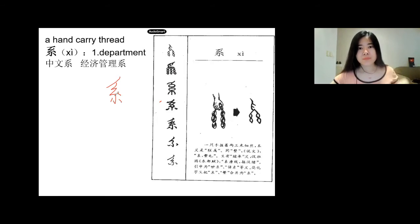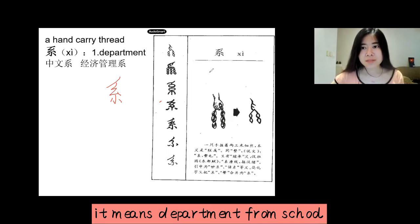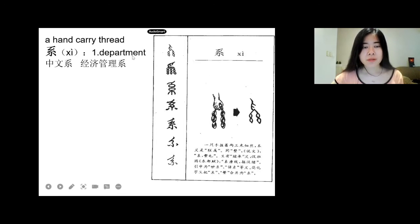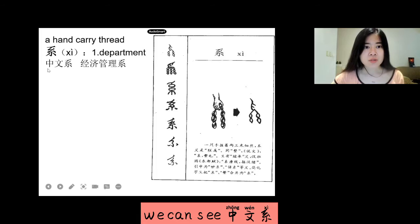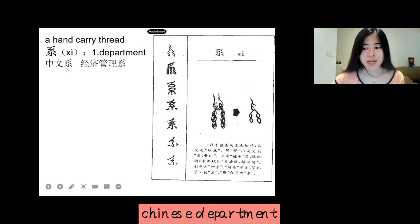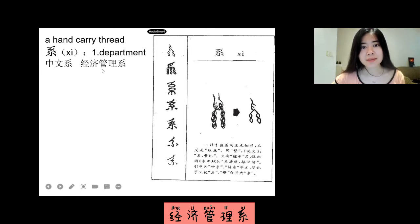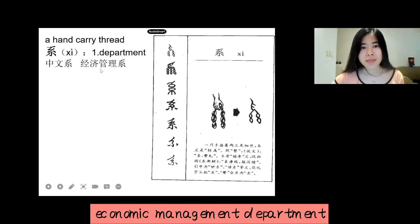系 (xì) means department from school. We can say 中文系, Chinese department. Or 经济管理系, economic management department.